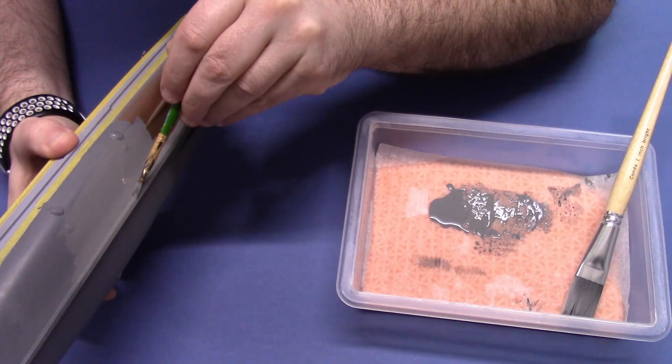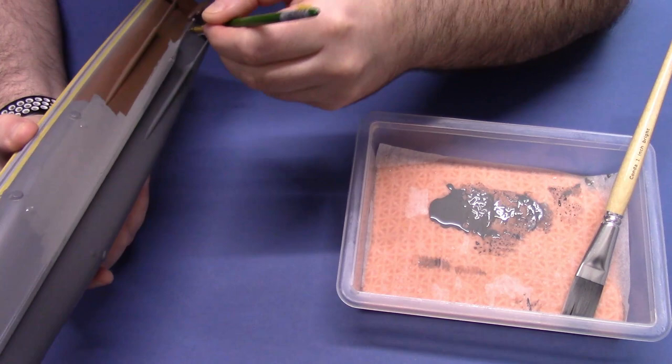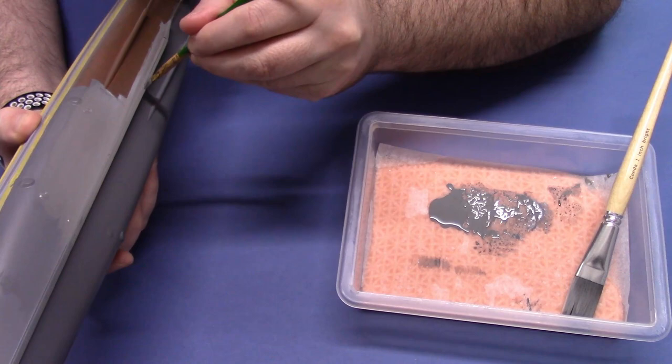So when you're painting in this keel section you have to just make sure that once you've painted one leading edge, you flip over and make sure there's no paint building up on the other side of the leading edge.